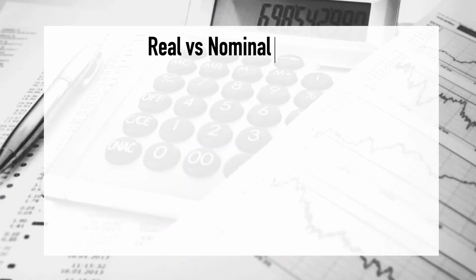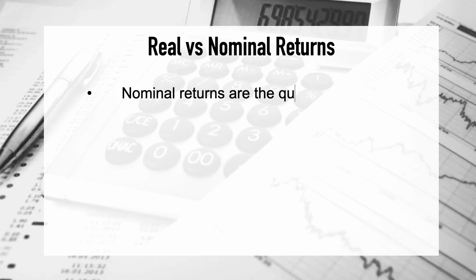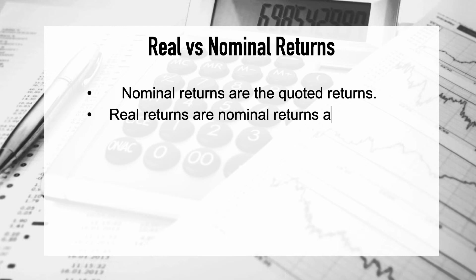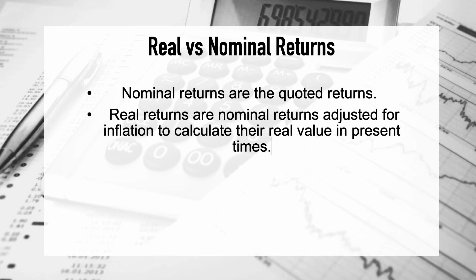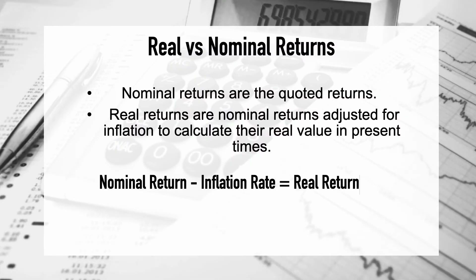Lastly, let's touch on real versus nominal returns. Nominal returns are the quoted returns — for example, a quoted 5% rate of return on your investment. Real returns are nominal returns minus the inflation rate, because as we discussed, inflation erodes the real value of money. To calculate the real return, you simply take the nominal return and subtract the inflation rate, which normally stands at around 2% in the UK.